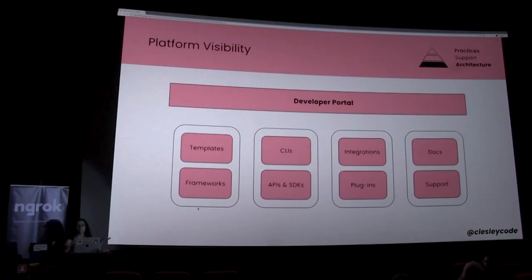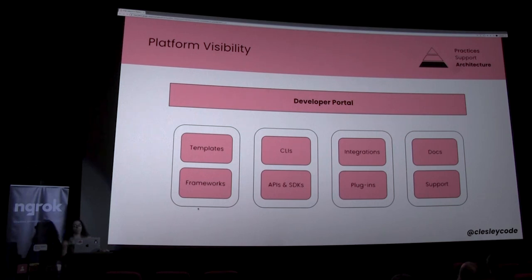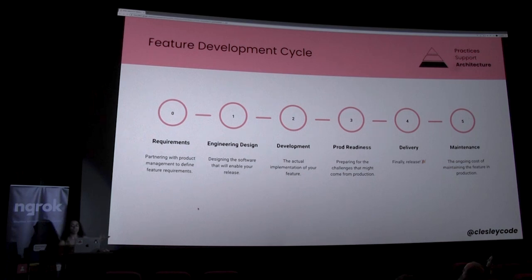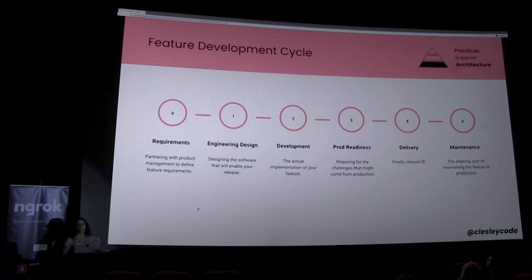Developer portals tell the story of what it means to develop software at your company, and I want to provide concrete examples that tie the concepts together. This is the story we're telling: the one around the feature development cycle. The ones most relevant for platform engineering are the last three stages — development, production readiness, and release — and those are the ones we'll focus on for the rest of this talk.